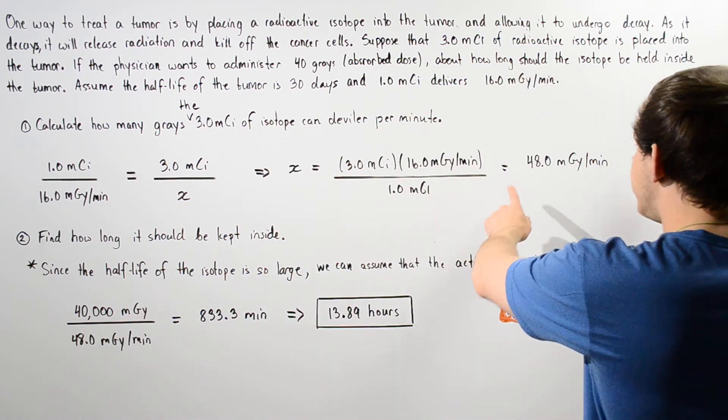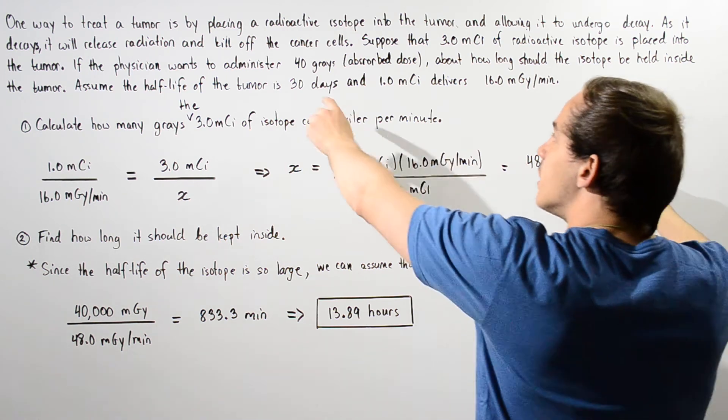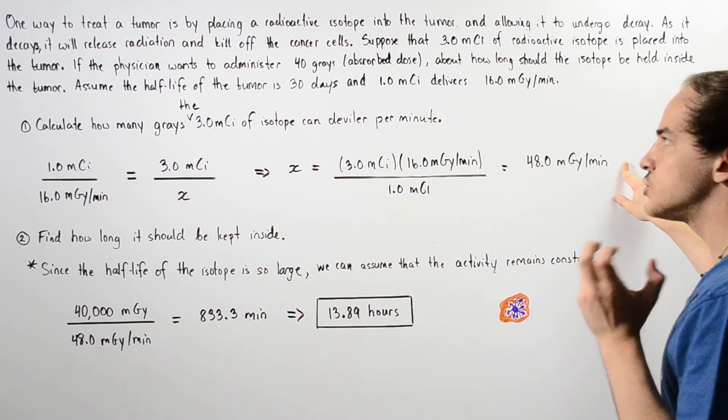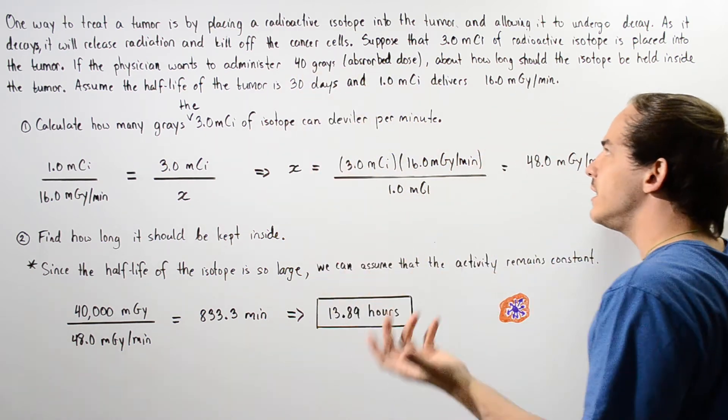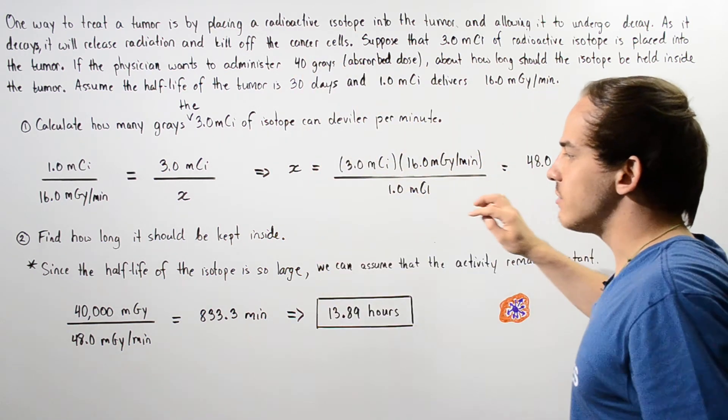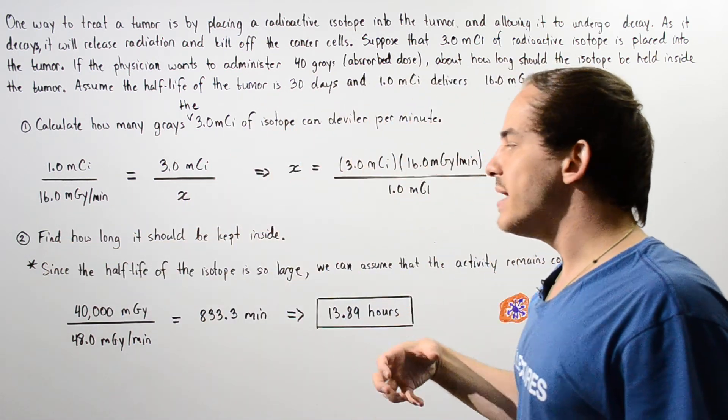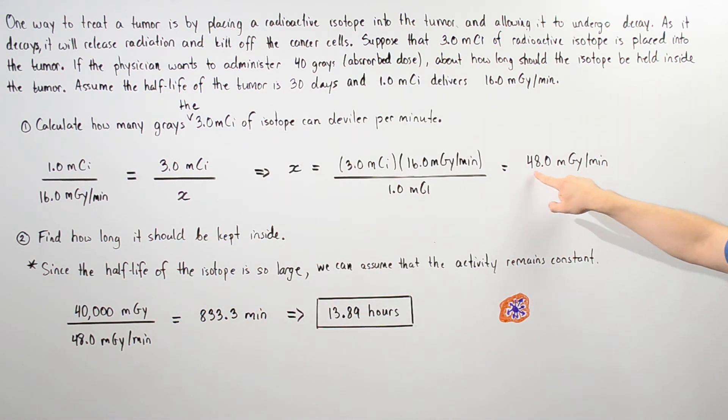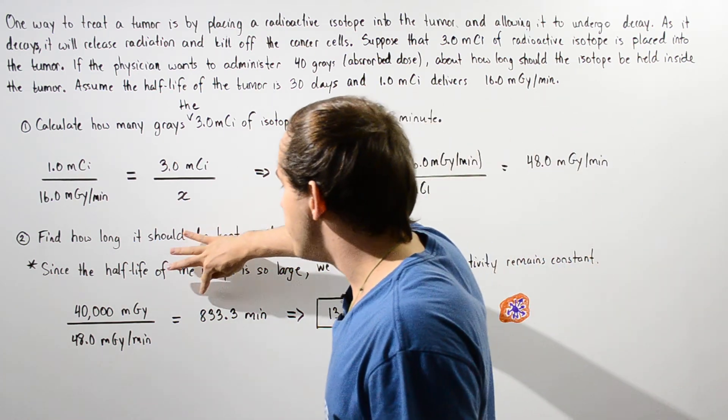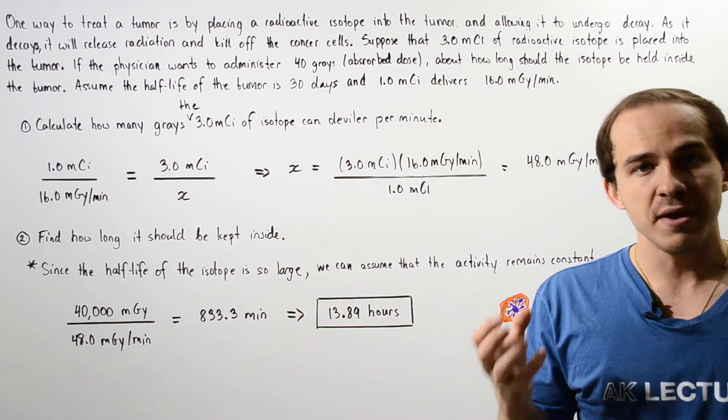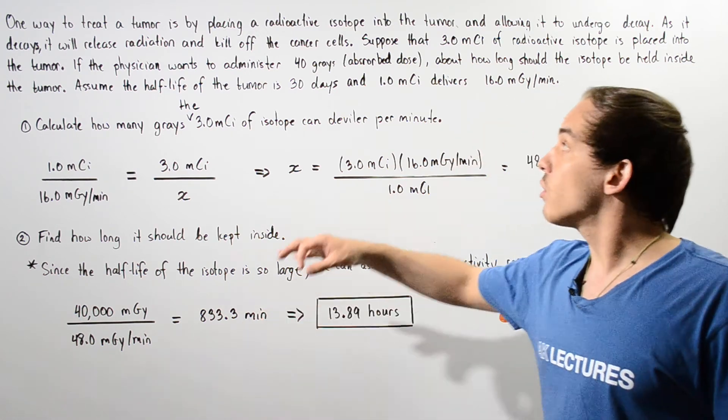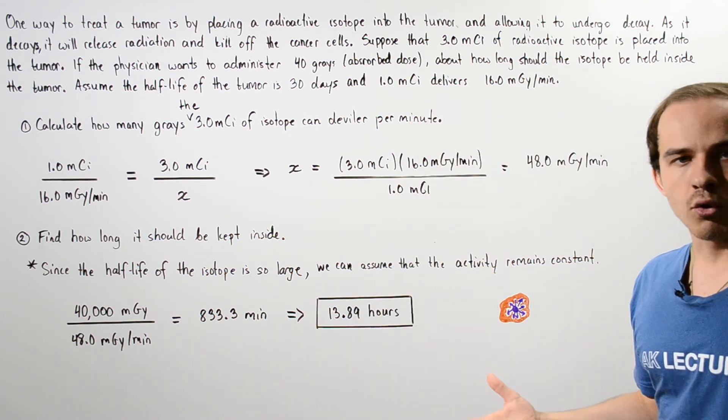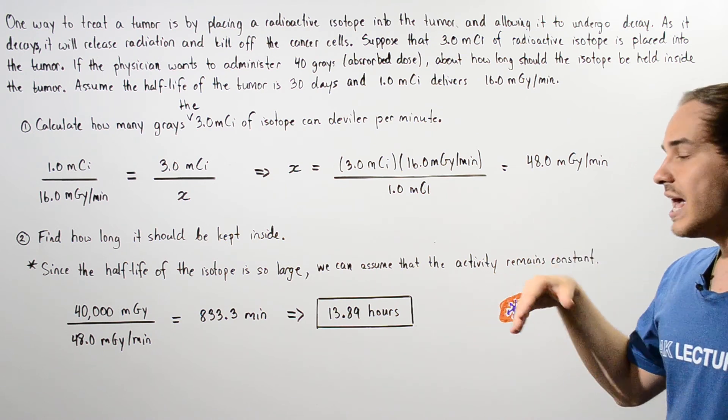In that case, we simply take our quantity of 40 grays. This is how much radiation should be absorbed by our tumor. We convert from grays to milligrays by multiplying this by 1,000. So, 40,000 milligrays should be delivered to that tumor. And we divide that by our rate of 48 milligrays per minute. And we get about 833.3 minutes. This is how long our isotope should remain in the tumor, and this is equal to about 13.89 hours, a little bit more than half a day.